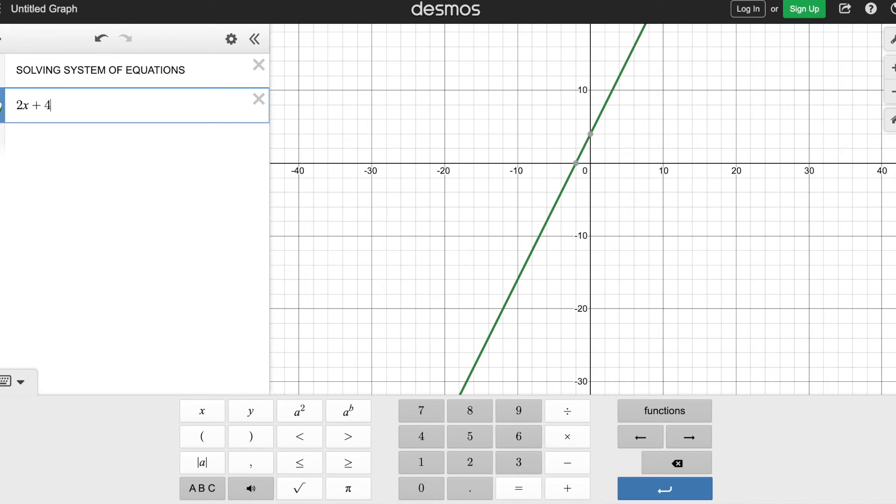Let's move on to problem number two. Now both lines are graphed. Does it cross? Do you see two lines? No, I only see one line. So that means it's going to be infinitely many solutions.